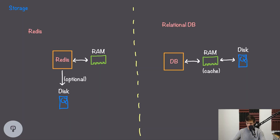Now let's take a look at storage, which is probably the most interesting thing about Redis. With a relational database, the dataset is stored entirely on disk, and RAM is only used as a cache — both a write cache and a read cache. RAM is hundreds or even thousands of times faster than disk, so databases try to keep most of the dataset in memory. With Redis, on the other hand, the entire dataset is stored in memory and is never persisted to disk, meaning your entire dataset has to fit in memory on your server, and if the server fails, you lose all your data.